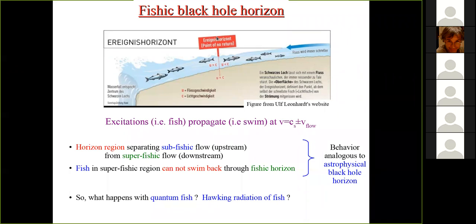There is a point we call the horizon, after which the speed of flow is faster than the swimming speed, so there is no way the fish can cross back. Once the fish has swum across the horizon, it cannot return. This point of no return is analogous to what happens in astrophysical black holes: whenever something crosses the horizon, there is no way it can come back to the external space, and its fate is to fall into the singularity. This flowing river plays a very similar role to an astrophysical black hole.